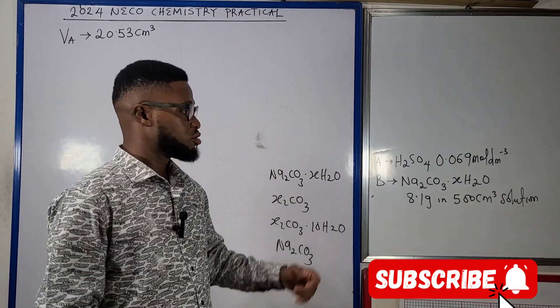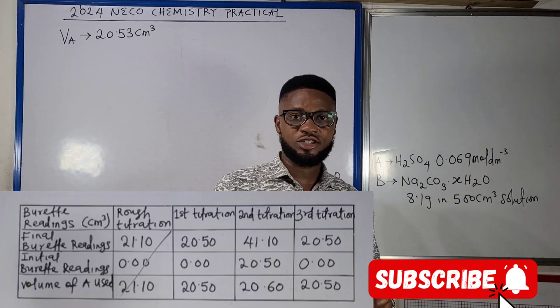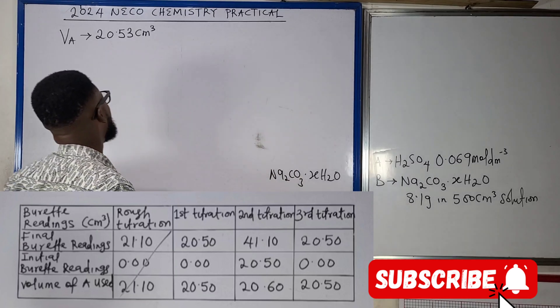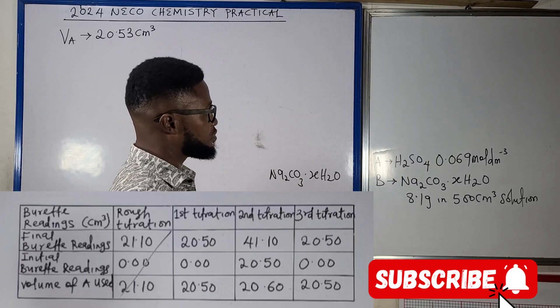Not to forget that in the first lecture video we've had to titrate and construct the titration table, where we've agreed that our title value is 20.53. That's the average volume of acid used.